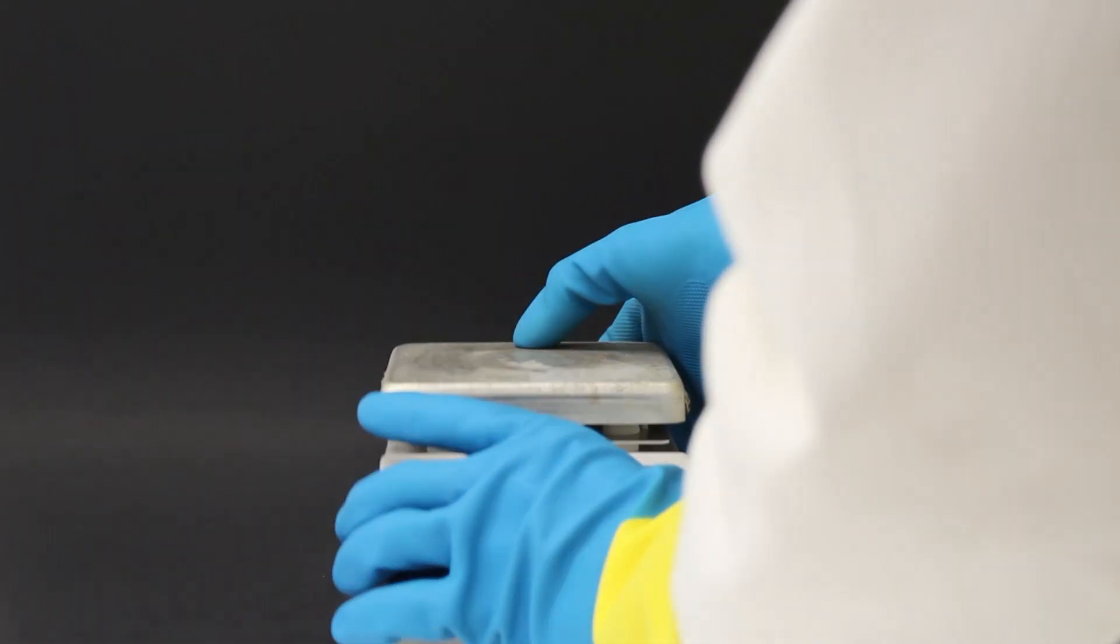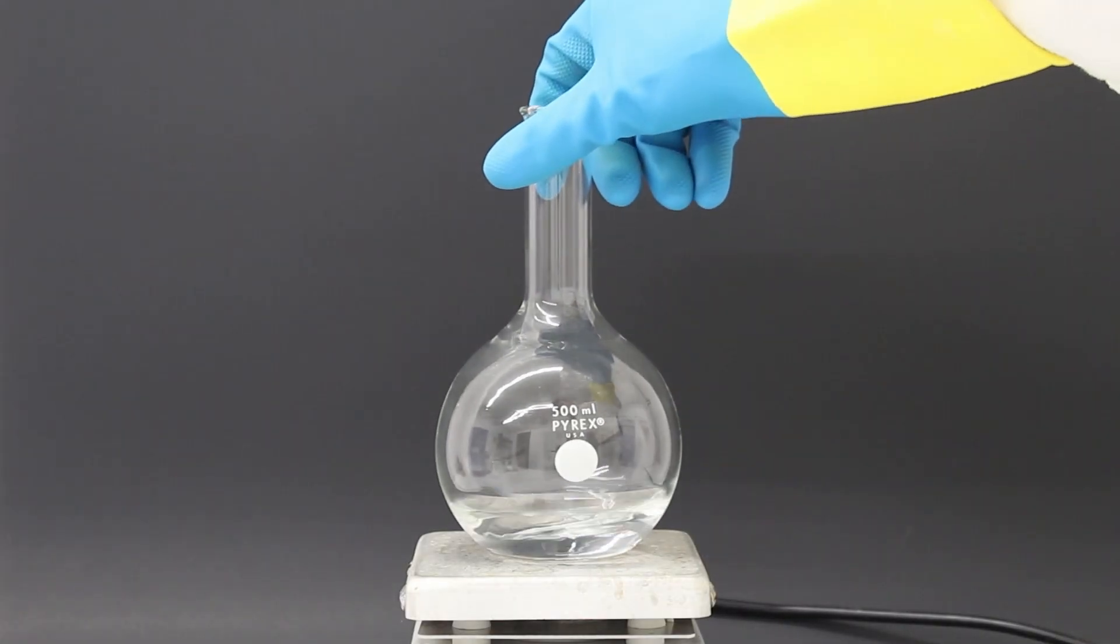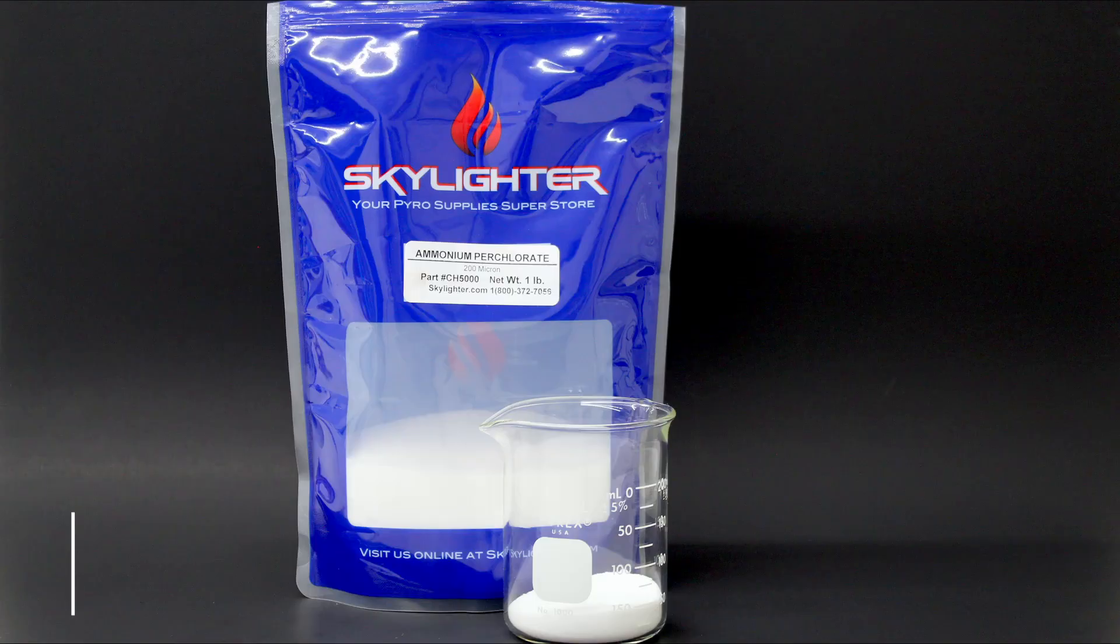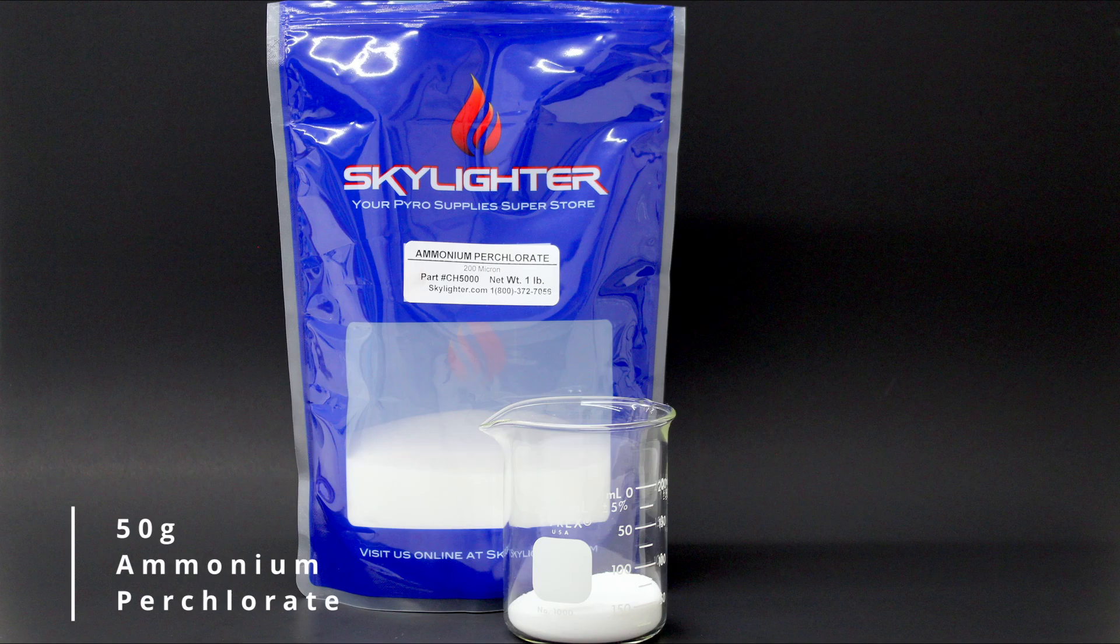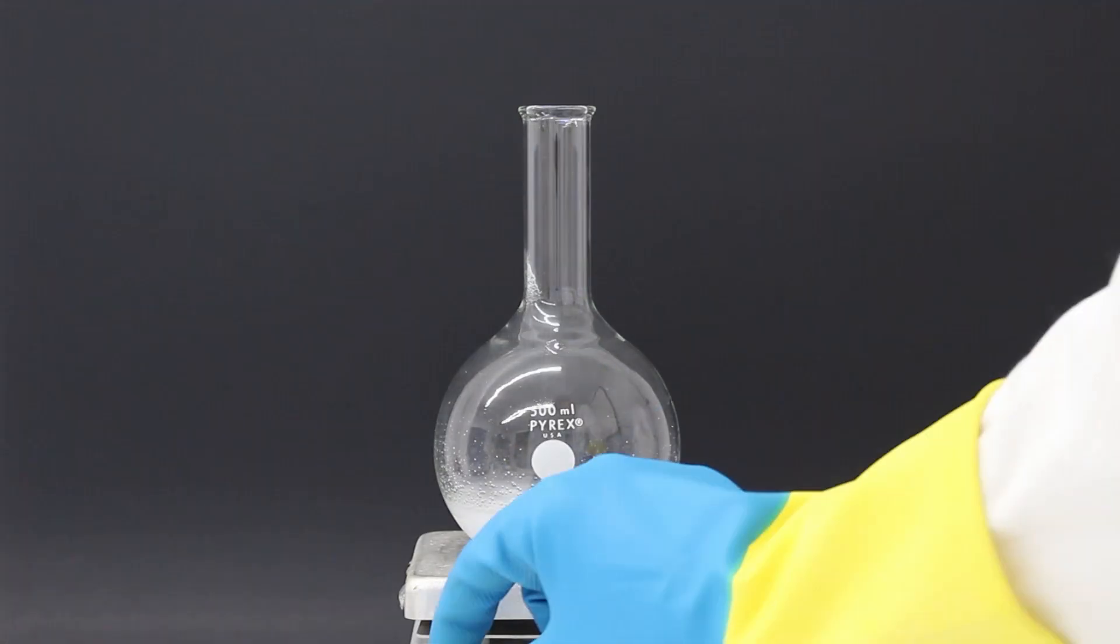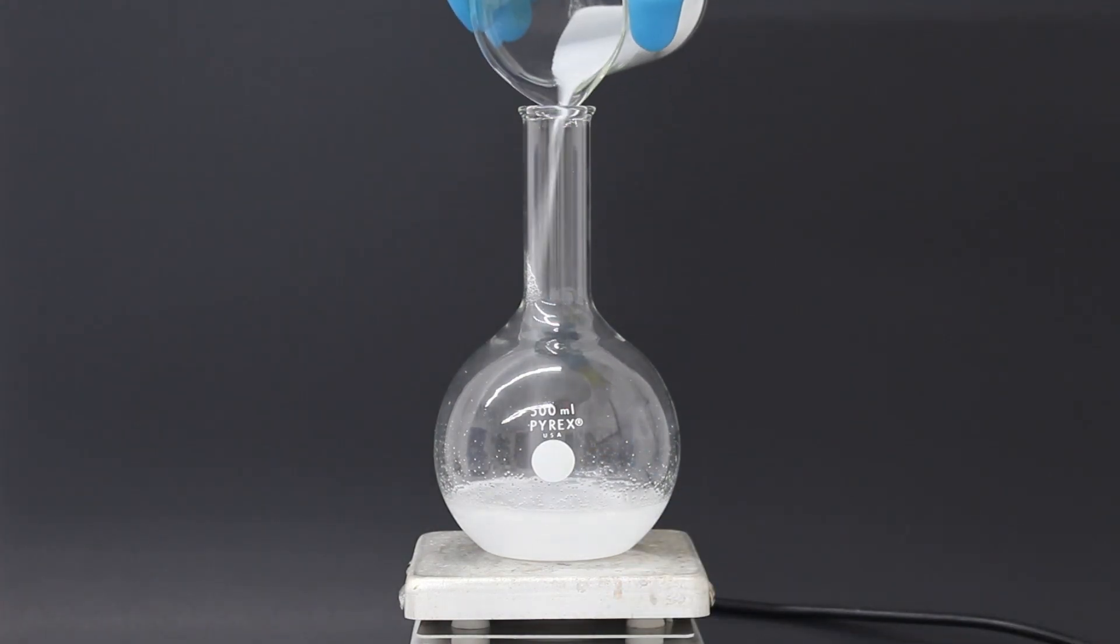Let's get started. The first thing we're going to need is 60 milliliters of distilled water, and we're going to add a magnetic stir bar. Then we're going to add 50 grams of ammonium perchlorate and turn on stirring and heating. It will not all dissolve, but that doesn't really matter.